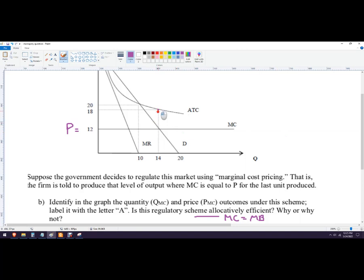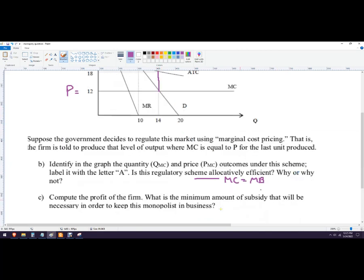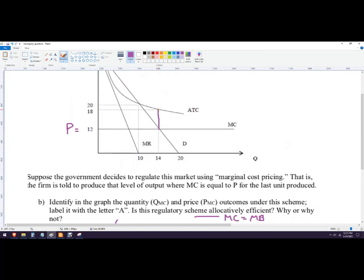However, the firm is losing $6 per unit. So it says compute the profit of the firm. So there's negative six. And because it's going to cost them 18 to produce and they sell them for 12. So we're negative six on the profit side. And then we're going to multiply that by 14.